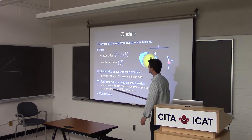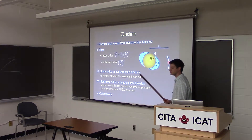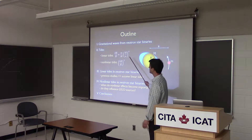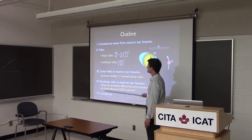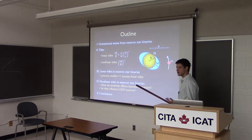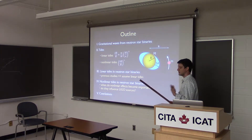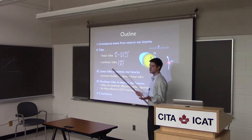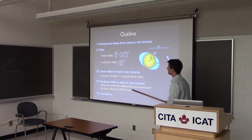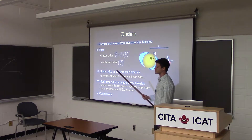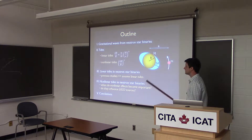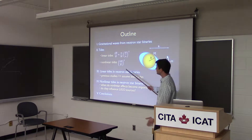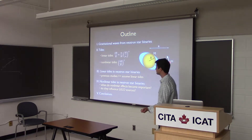In a binary system, if the second body raises a tide on the primary with amplitude delta r, linear tides involve perturbing the fluid equations to linear order in delta r over r, which scales roughly as the mass ratio times the ratio of radii to the third power. After discussing linear tides, I'll discuss weakly nonlinear tides, keeping terms to order (delta r / r) squared.